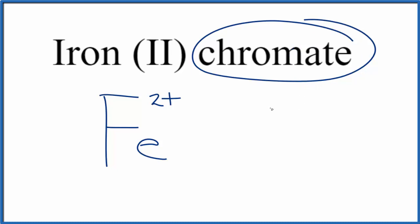So you either memorize that the chromate ion is CrO4, and the whole thing has an ionic charge of 2-, or if you're allowed, you look it up on a table of polyatomic ions.